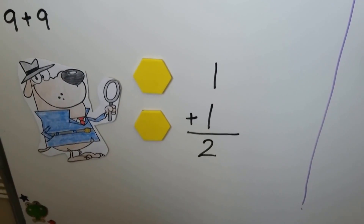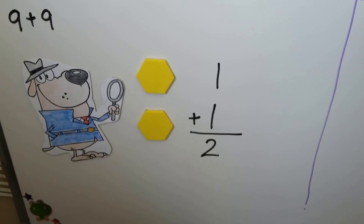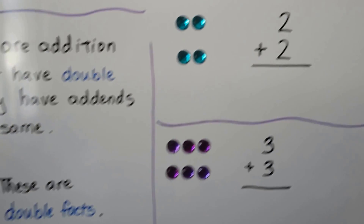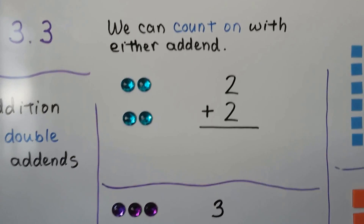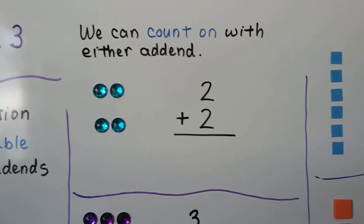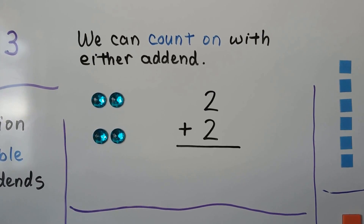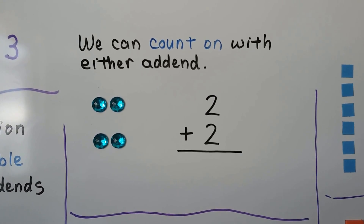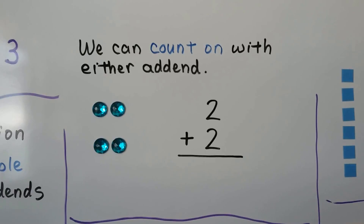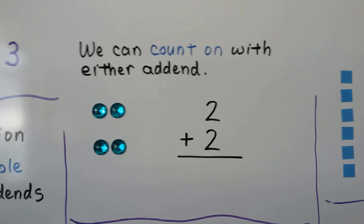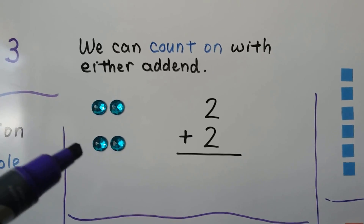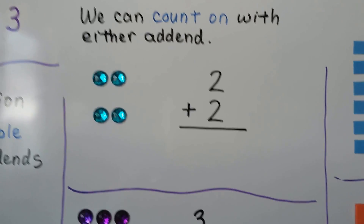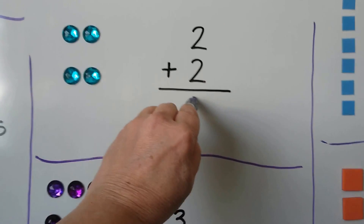1 plus 1 is equal to 2. We can count on with either addend. We don't have to pick a bigger one because they're the same number. We can start at 2 and count on: 3, 4. So 2 plus 2 is equal to 4.